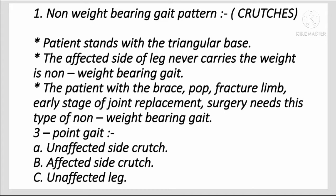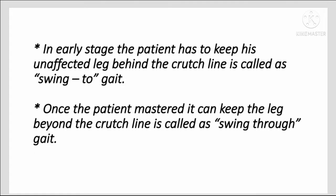3-Point Gait in non-weight bearing gait pattern: good first, so unaffected side crutch first, then affected side crutch, then unaffected leg. In the early stage, the patient keeps the unaffected leg behind the crutch line — this is called swing-to gait. Once the patient has mastered it, the leg can go beyond the crutch line — this is called swing-through gait.